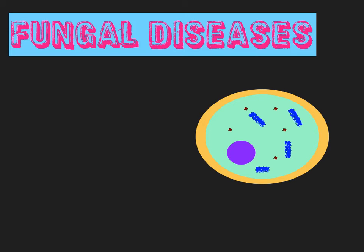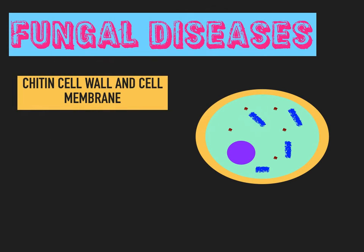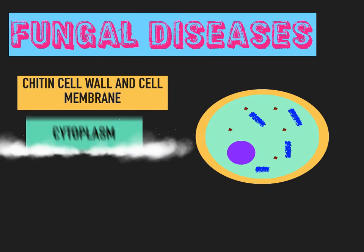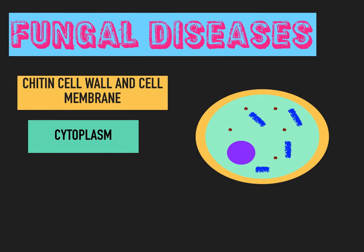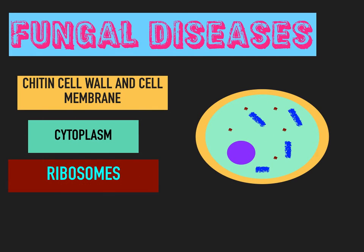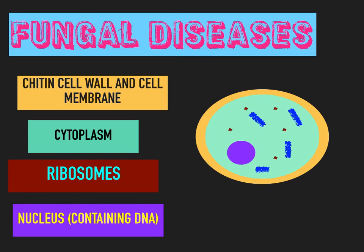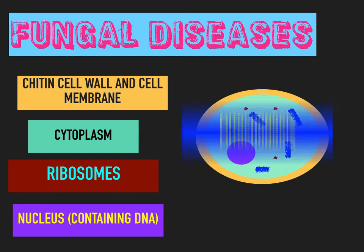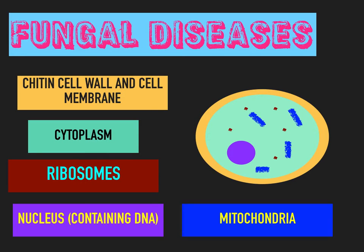Now for diseases caused by fungi. A fungus cell has a cell wall on the outside — this time it's made from a substance called chitin, so it's different to plant and bacteria cell walls. Inside that there's a cell membrane, and then cytoplasm for chemical reactions. It has ribosomes to produce proteins, a nucleus which contains its DNA — the same as in an animal or plant cell, making it another example of a eukaryote. And finally it has mitochondria, highlighted in blue, where aerobic respiration happens producing energy in the cell.